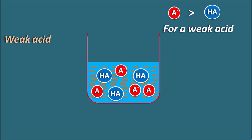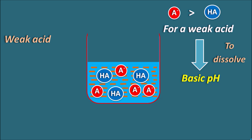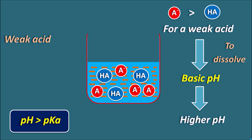In general, for a weak acid, we must maintain a basic pH in order to dissolve it in water. If we maintain the pH at higher values, the weak acid is easily solubilized. This relation can be directly observed from the Henderson-Hasselbalch equation: if pH is greater than pKa, the weak acid will exist more in the ionized form compared with the unionized form, so A⁻ is greater than HA.